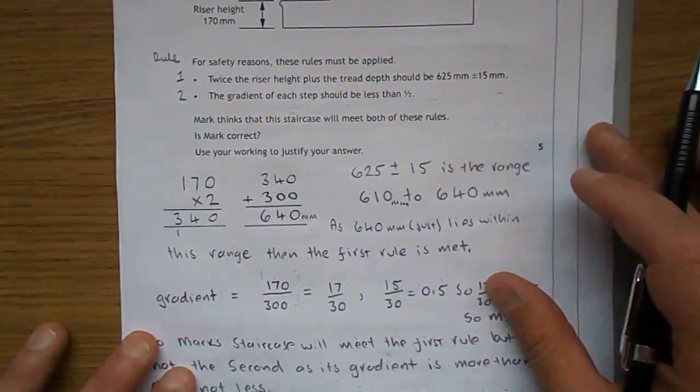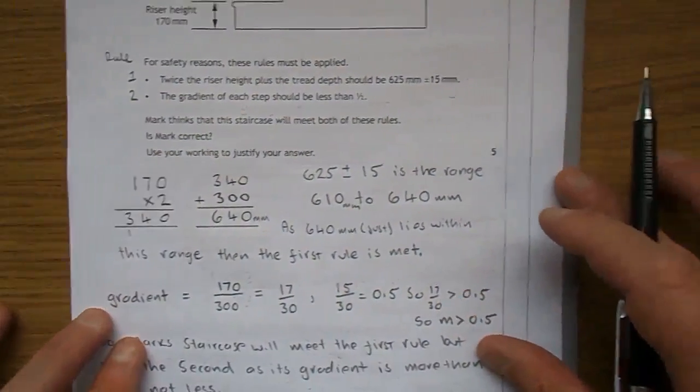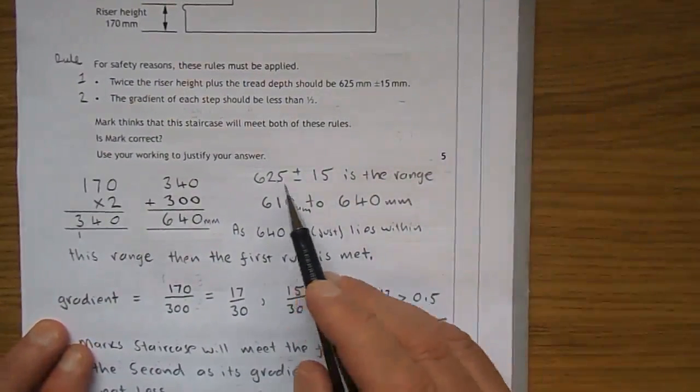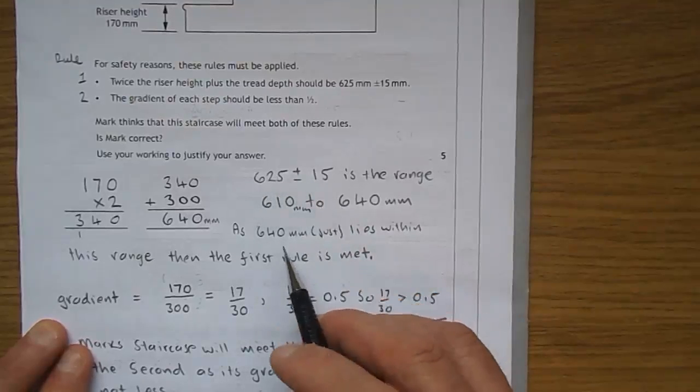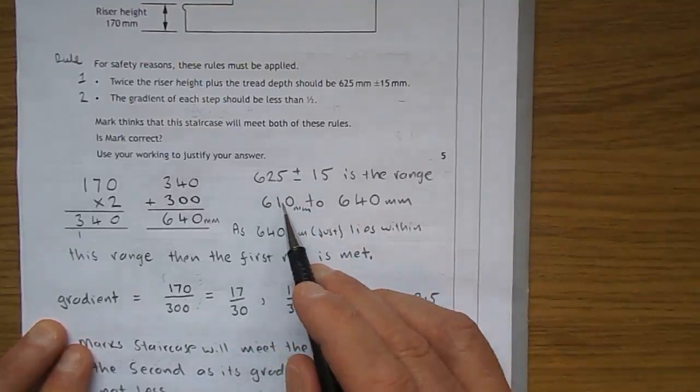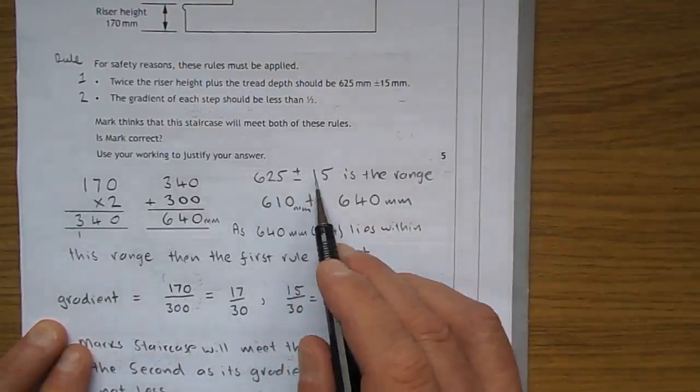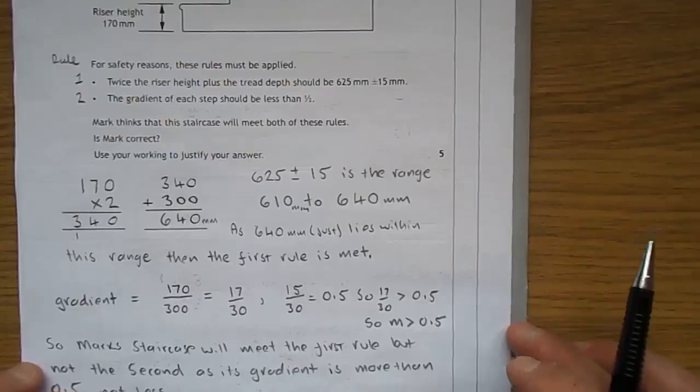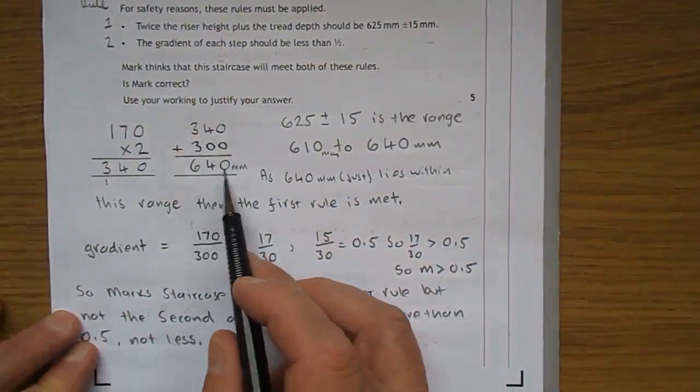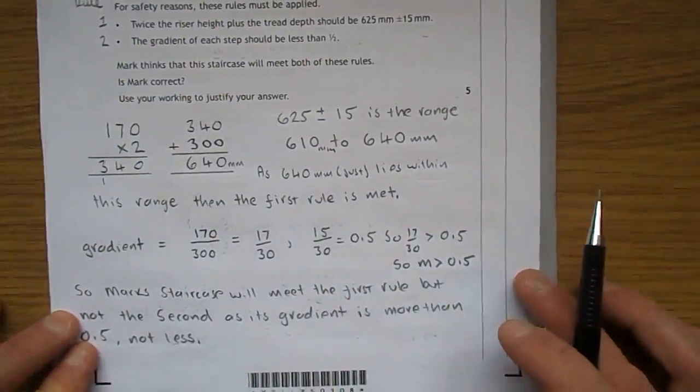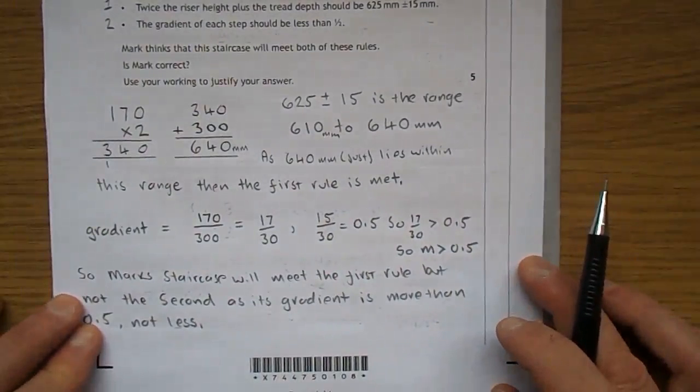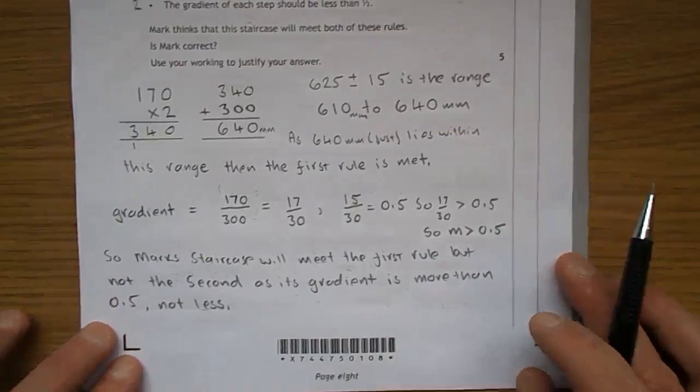Now that gives 640. Now let's go back and see what the range of values are. 625 plus or minus 15 is 625 take away 15, which is 610, to 625 plus 15, which is 640. And as you can see there, he gets 640, which is just within the range. It's the very uppermost value. So the first rule is met.